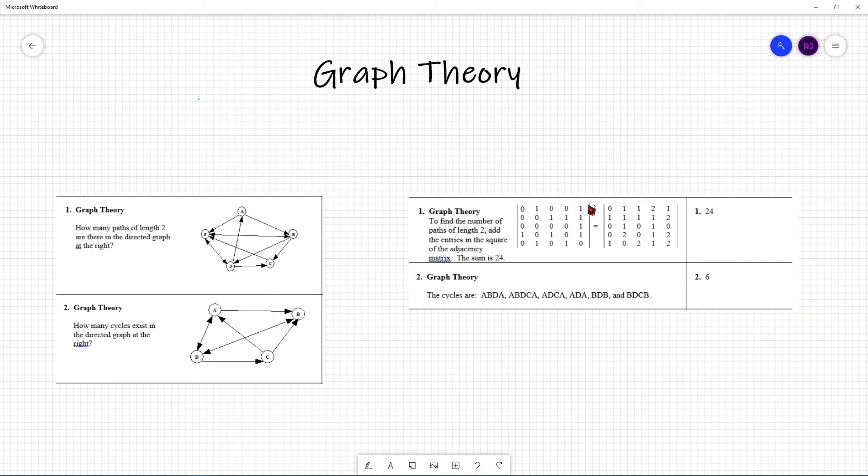And numbers were put, zeros and ones, where there was an edge that went from this row to this column's vertex. Then, because we wanted a path of length 2, we square that matrix. And we get the resultant matrix. And now, since we want all paths, or how many paths of length 2 there are, then we just sum up all the numbers in this resultant matrix to receive the answer of 24.